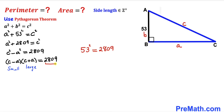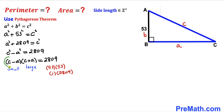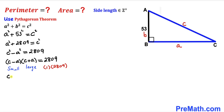Since 53 is a prime number and 53² = 2809, the possible factor pairs of 2809 are 53 × 53 and 1 × 2809. The scenario 53 × 53 is not valid because both factors would be equal — we need a smaller and a larger factor. So the valid factorization is 1 × 2809, where the smaller factor corresponds to (c − a) and the larger to (c + a).